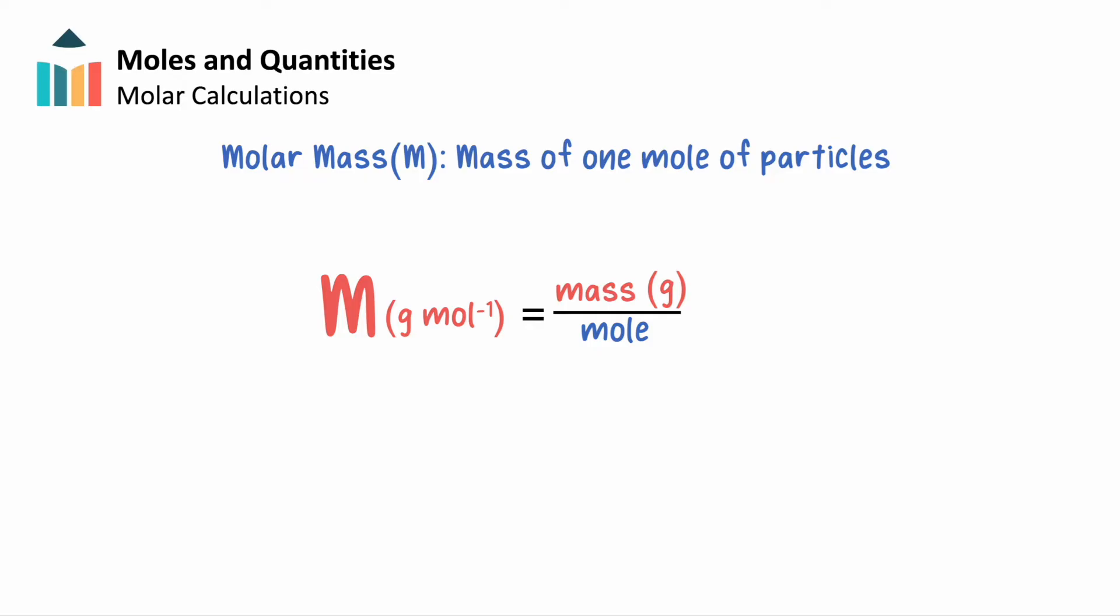We can find molar mass on the periodic table, labeled as the relative or average atomic mass of an element, again in grams per mole.